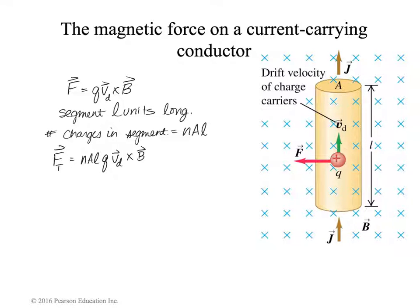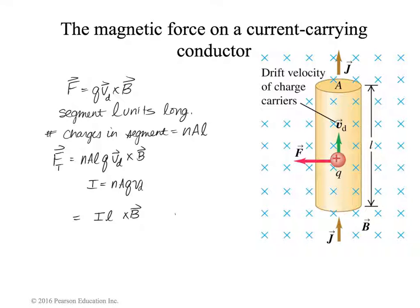If we remember, the expression for current is equal to n, A, q, and the drift velocity. So we can take those terms out of it, and we have I L cross B. The problem then becomes: which of these terms do we associate a vector nature to, because we still want to do a cross product that gives us the total force.